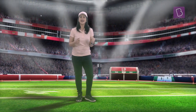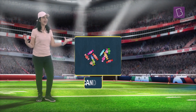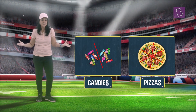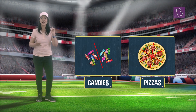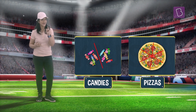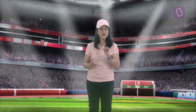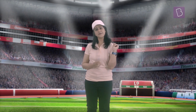We divide things like candies and pizzas among our friends or siblings so that everyone gets an equal share. Now the question is, are we able to divide objects or numbers completely every time?